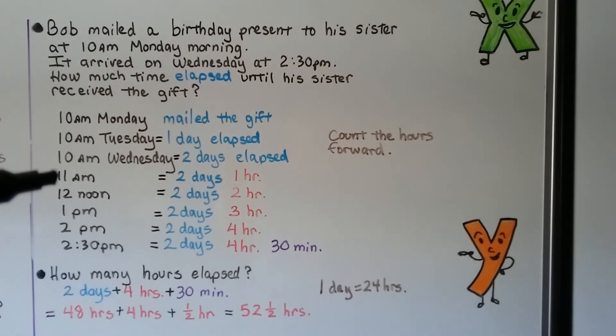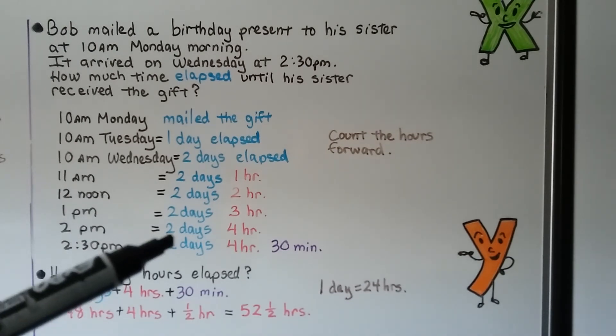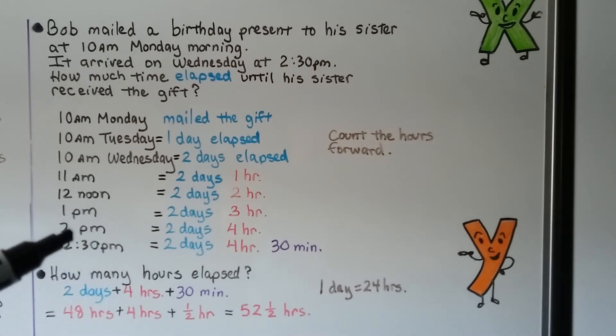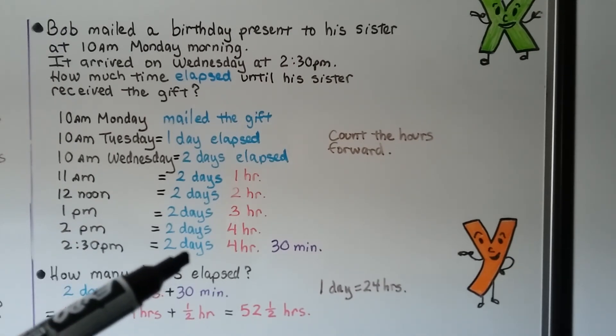So if we do 11 a.m., we're at two days, one hour. 12 noon would be two days, two hours. 1 p.m., 2 p.m. Now we're at two days, four hours. It arrived at 2:30 on Wednesday. So we need to add a half hour. So we've got two days, four hours, and 30 minutes. We just counted the hours forward.